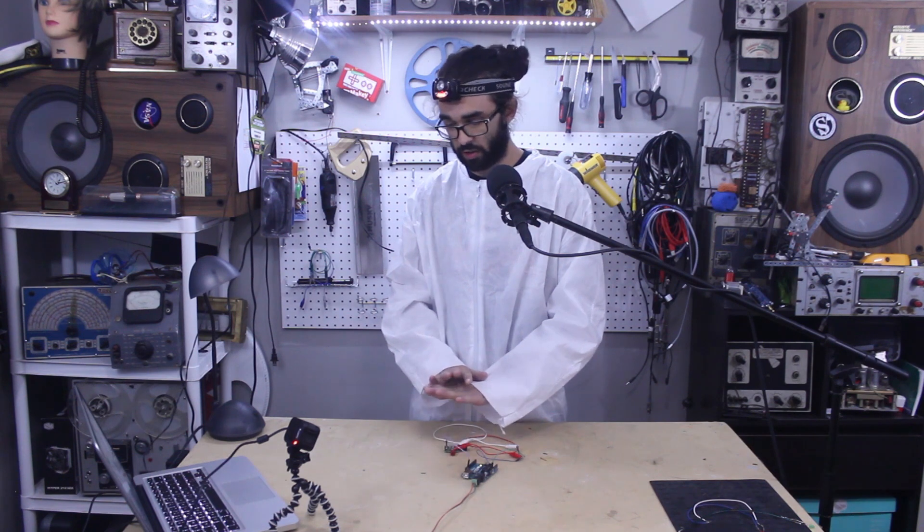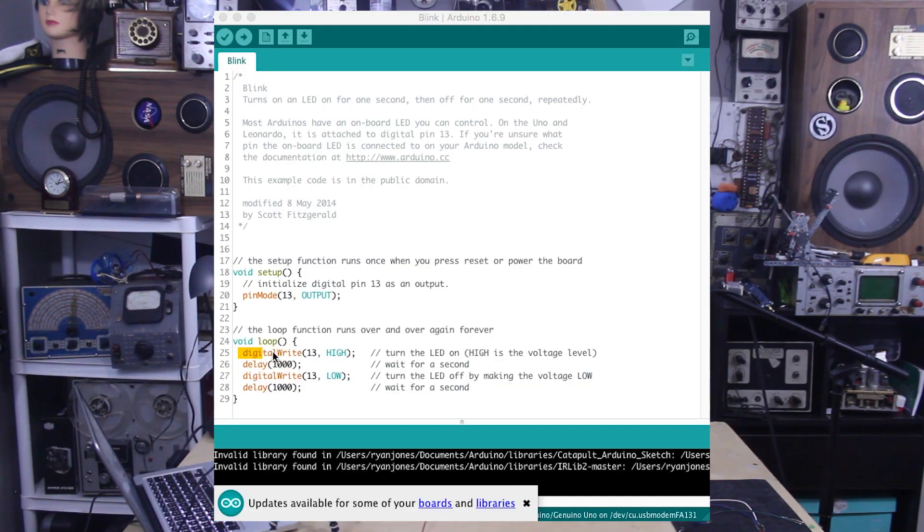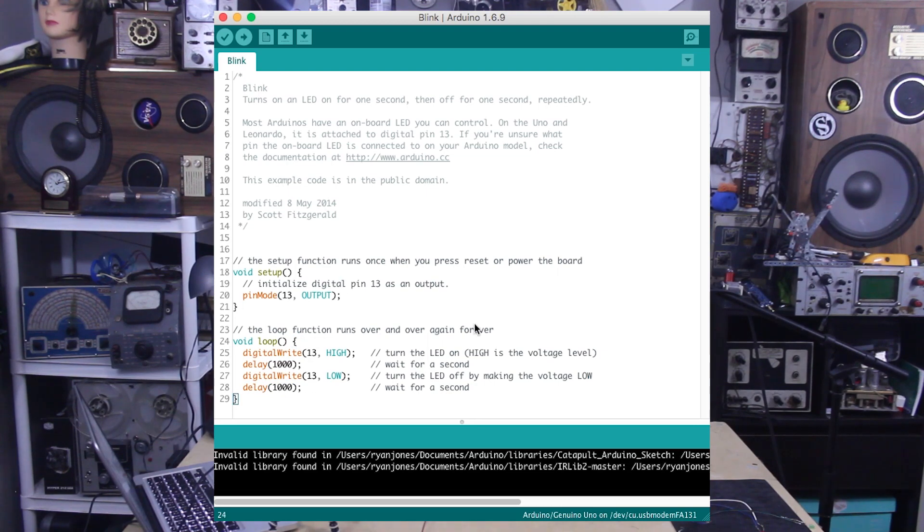When first beginning, delay statements are a great easy way to adjust timing within your program, like everybody's first one: blink. Blink turns an LED on, then waits a second, turns the LED off, then waits a second, and repeats the loop over and over. The problem with this is that the delay pauses the program for a specified time, meaning nothing else can be done in that time, like monitor a button.